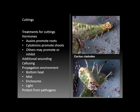Some of the treatments for cuttings once made include the use of hormones. Sophisticated propagators now make use of a wide variety of hormones applied at different times to either promote or inhibit various types of growth activities. In general, auxins promote root growth, cytokinins promote shoot growth, and others may either promote or inhibit growth and are used in specialty applications.